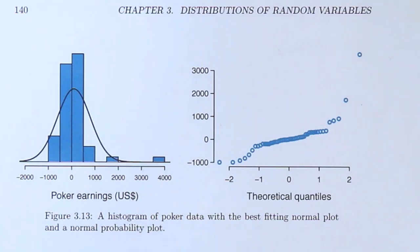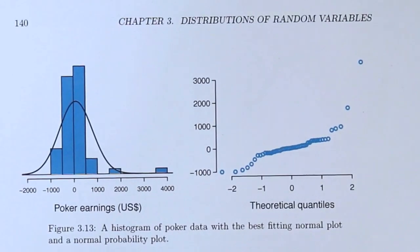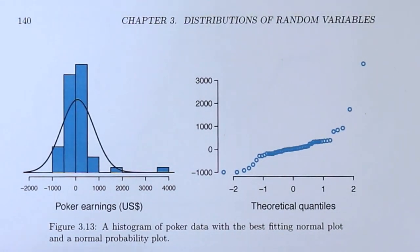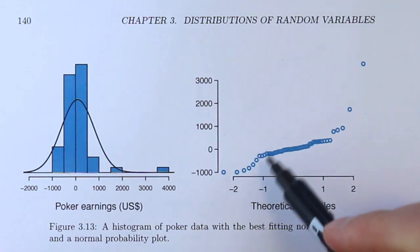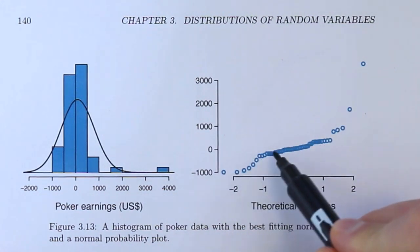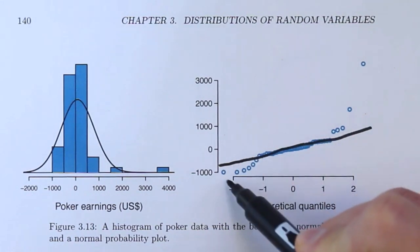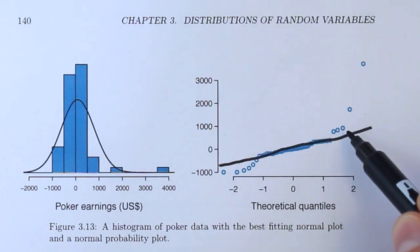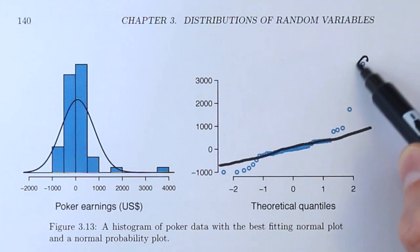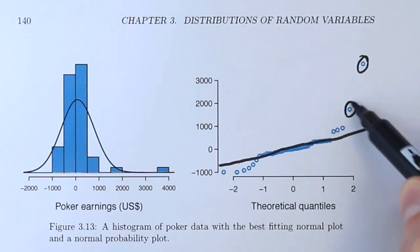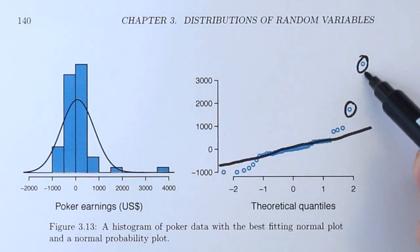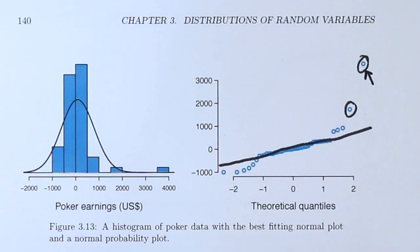In the next data set we're looking at poker earnings for each day over 50 days for a professional poker player. Looking at the normal probability plot, if we drew a straight line we'd see deviations below and some above. What really identifies this data set as non-normal are the outliers — one observation very high up and another that looks quite suspicious. That extreme outlier is strongly telling us this data set is not normally distributed, even though it's a small data set. That's a very large deviation from the line.